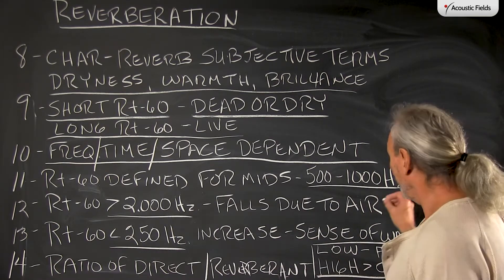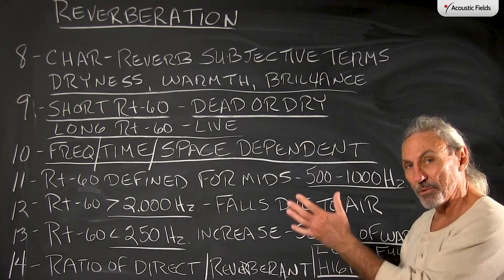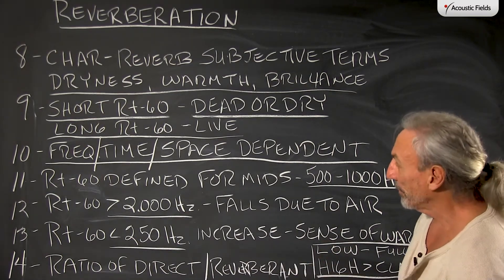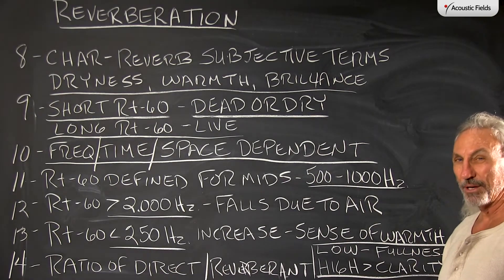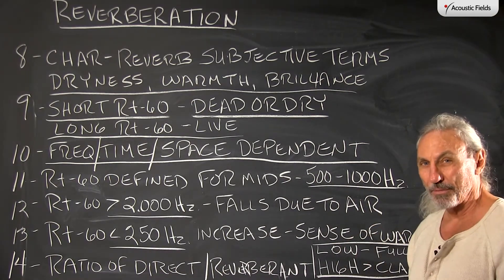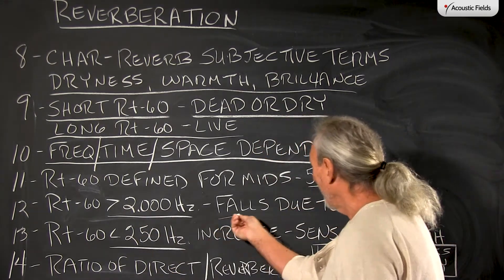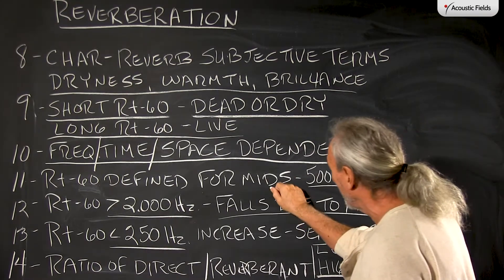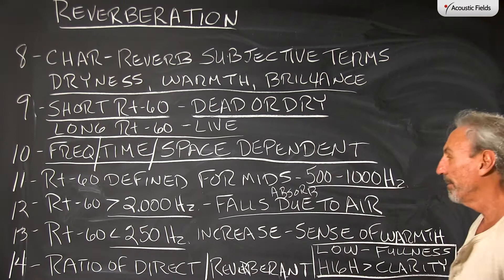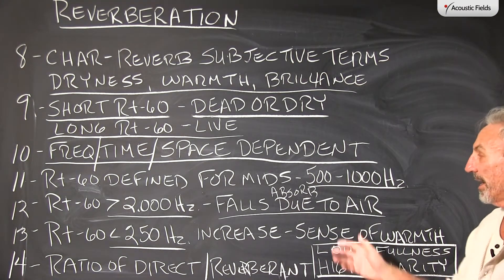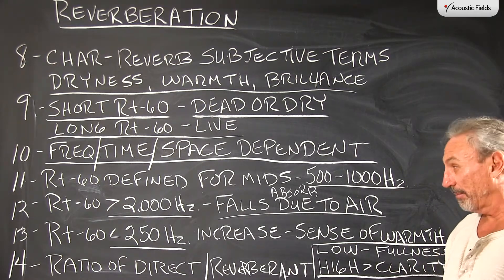Let's break RT60 times down and see where the groups fall. RT60 is really a mid-frequency measurement — 500 to 1000 Hz — that's where the gist of everything falls. If it's greater than 2000 cycles, we have a lot of absorption in the air, so we have to be careful about air pressure and similar factors. Anything above 2000 Hz can be significantly impacted by air.